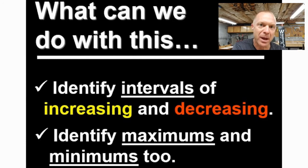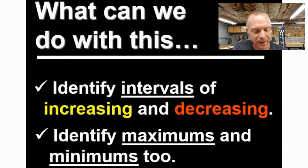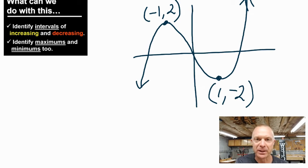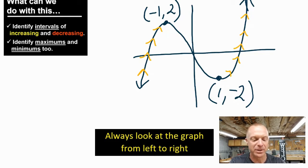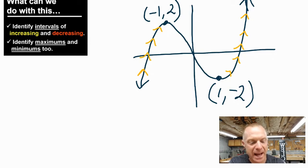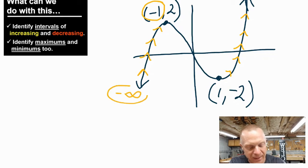I'm going to give you an equation or a graph, and you're going to classify some of these places. The hardest thing for students is just understanding how to say it. When a graph goes up, the second y value is greater than the first, and the graph is increasing. We always want to give the answer using the x value — the x value is kind of like the address. For this first interval, negative infinity all the way to negative 1 would be when it is increasing.